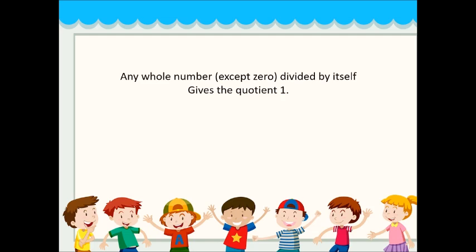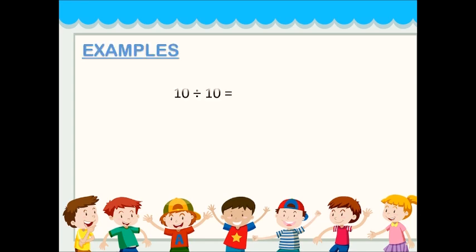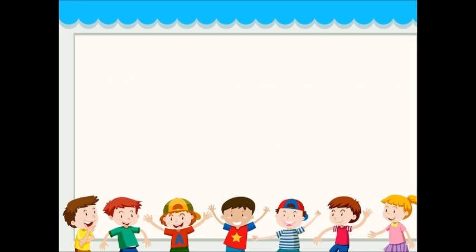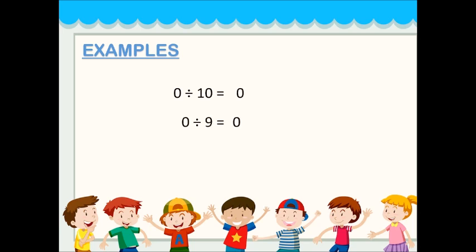Any whole number except 0, divided by itself, gives the quotient 1. So A divided by A equals 1. Example: 10 divided by 10 equals 1; 9 divided by 9 equals 1. Also, 0 divided by any number except 0 gives the quotient 0. So 0 divided by A equals 0. Example: 0 divided by 10 equals 0; 0 divided by 9 equals 0.